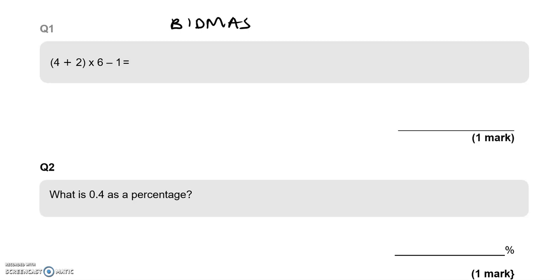We've got a bracket first, so we'll do the operation within the bracket first, which is 4 add 2, that makes 6 times 6, take away 1. Now in between multiplication and subtraction, we'll choose to do multiplication first. 6 times 6 is 36, take away 1 gives us 35.